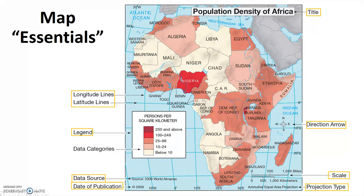As you proceed through the course, look around at maps you see in your textbooks, classrooms, or on the internet. Do they include all these components? If not, would the map be improved by adding one of the missing components? Or is it not necessary? On some maps, truly not all eight essentials are necessary.